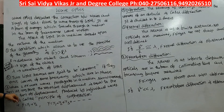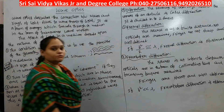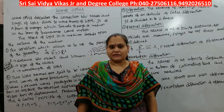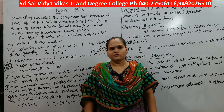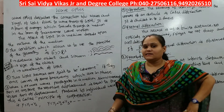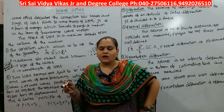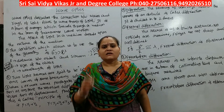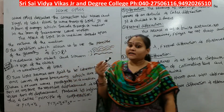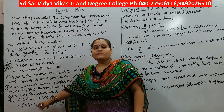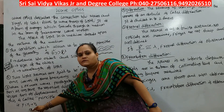When two or more waves propagate in a medium simultaneously, then at any point the resultant displacement is equal to the vector sum of the displacements produced by the individual waves. This is called the principle of superposition, where wave displacement is represented by y. We consider two waves: y1 is the first wave displacement and y2 is the second, so y = y1 + y2.